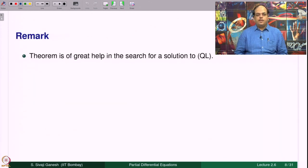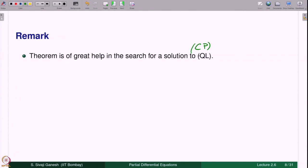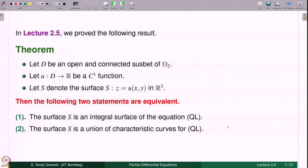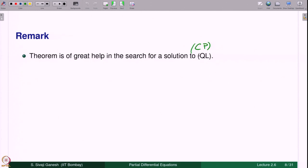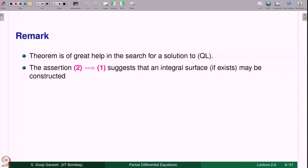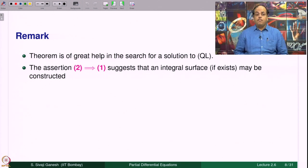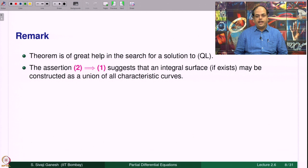A remark about this theorem: it is of great help in the search for a solution to the Cauchy problem for quasilinear equations. The assertion '2 implies 1' — where 2 says the surface S is a union of characteristic curves, implying S is an integral surface — suggests that an integral surface, if it exists, may be constructed as a union of all characteristic curves. However, the theorem does not assert that a geometric object formed as a union of characteristic curves is necessarily a surface.